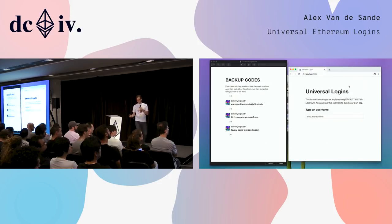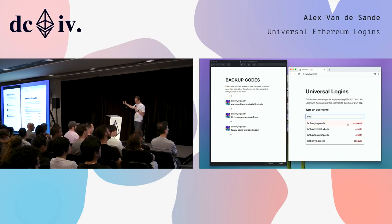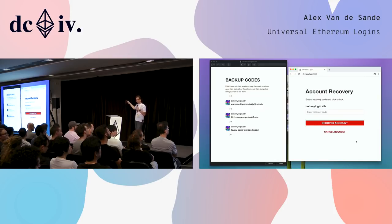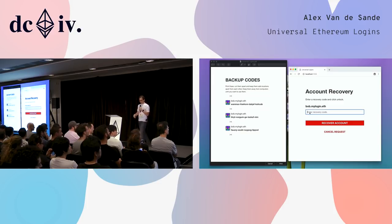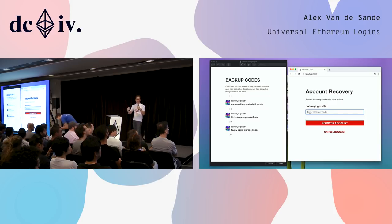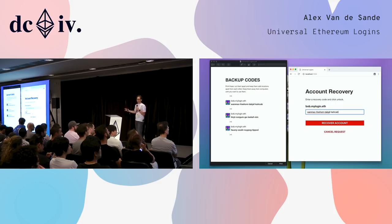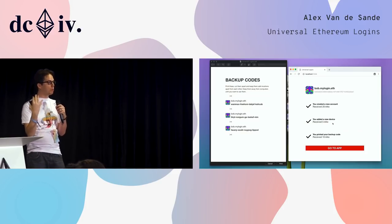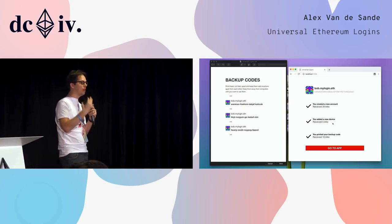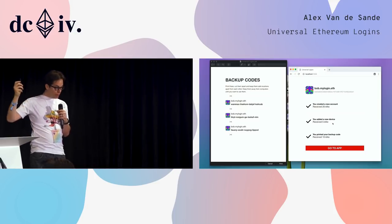How do you do the recovery? Just the same thing. Say you lost all your devices — go on the website, type your name, and instead of clicking connect, notice there is a recover button. On the recover button, you type one of those codes. I'm actually typing it rather than copy-pasting to show you it's not something so complex you need a QR code or digital file. It's something you can actually write. You might not be able to remember it, but it's writable — you can write it down on a piece of paper.